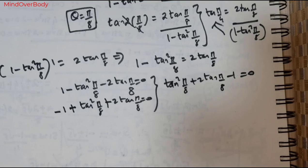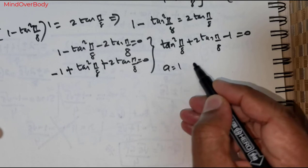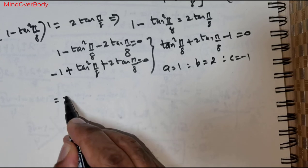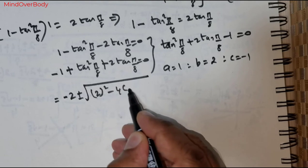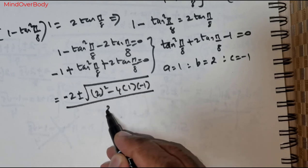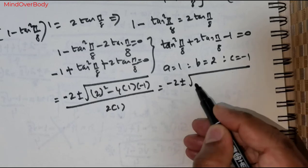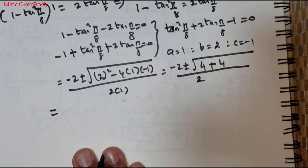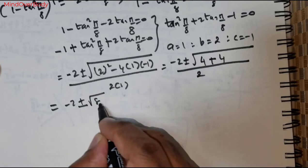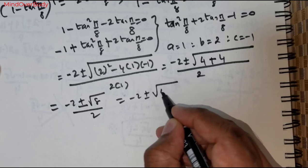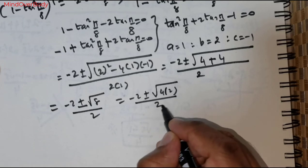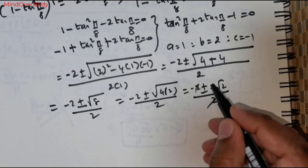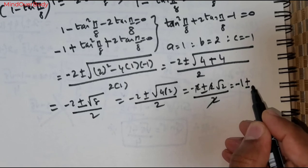Taking a = 1, b = 2, and c = negative 1, we apply the quadratic formula: negative 2 plus or minus the square root of 2 squared minus 4 times 1 times negative 1, all divided by 2 times 1. This gives negative 2 plus or minus the square root of 4 plus 4, divided by 2, which is negative 2 plus or minus root of 8 divided by 2. Writing 8 as 4 times 2 and taking out the square root of 4 gives negative 2 plus or minus 2 root 2 divided by 2, which simplifies to negative 1 plus or minus root 2.